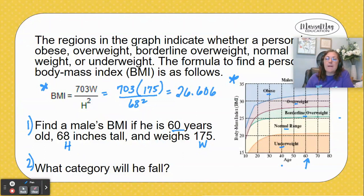So he's just in the borderline overweight category. I went over to his age and then followed it up—it looks like he's in the borderline overweight category. I hope this helps you with problems where you're asked to do multiple representations: an equation and a graph.